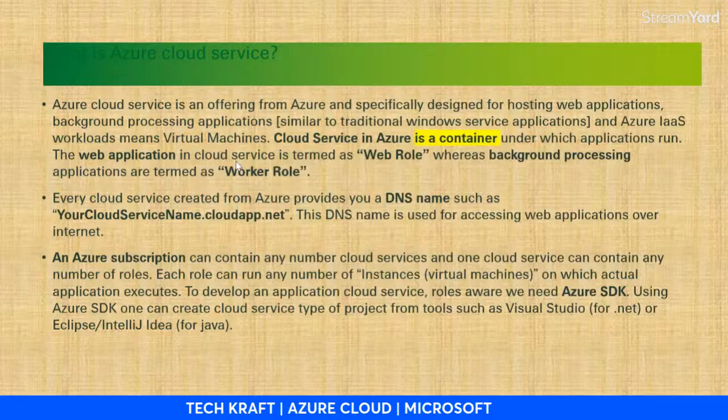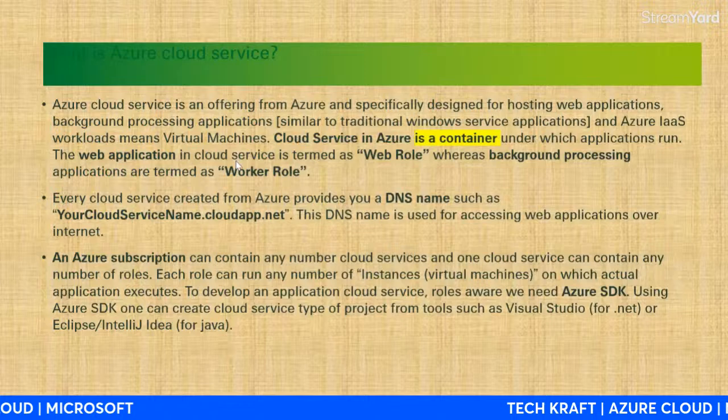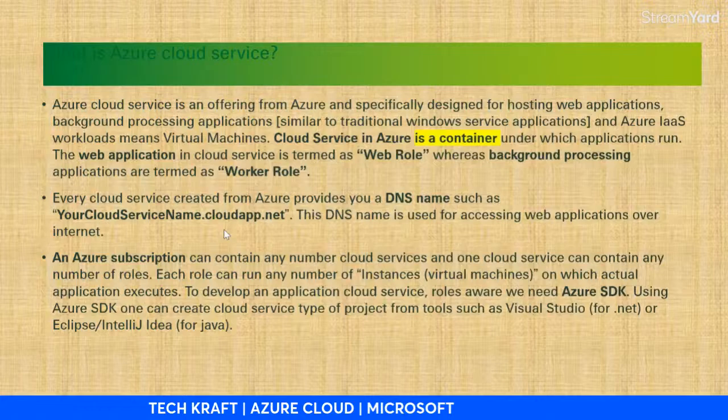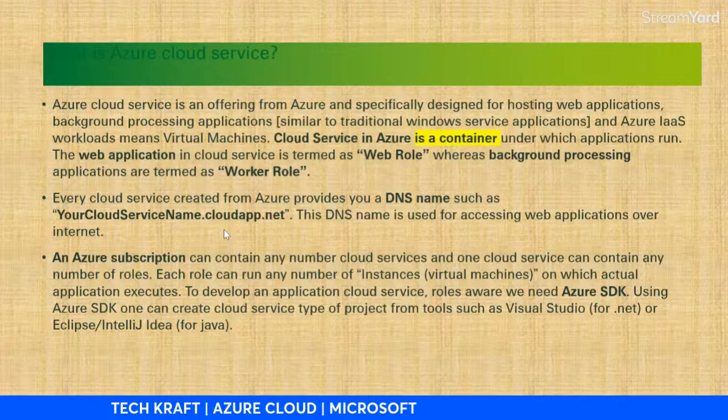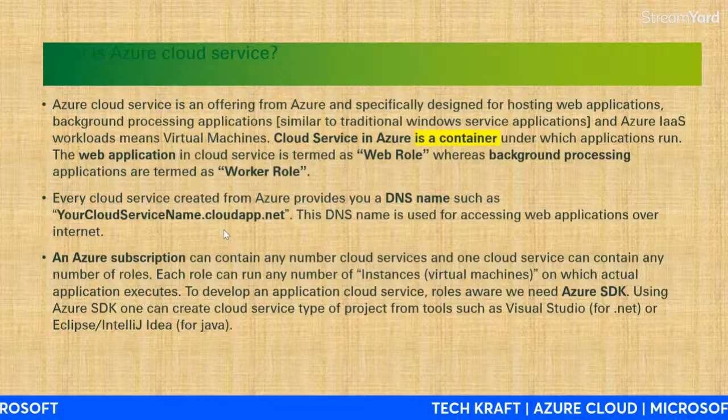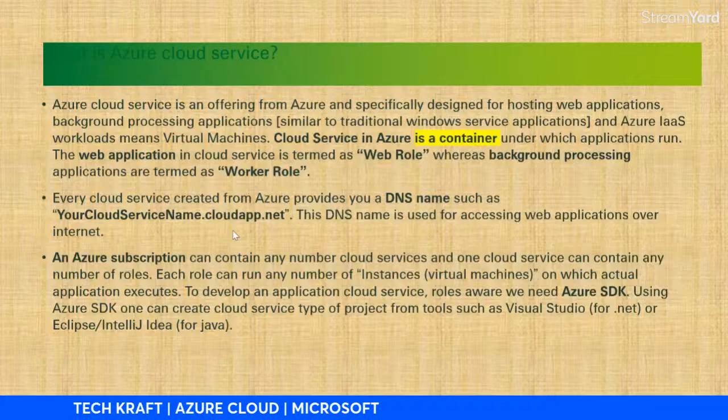Azure Cloud Services is designed for hosting web applications and background processing applications, with two roles: web role and worker role. For example, a cloud service application would be accessible via a DNS name like 'yourcloudservice.cloudapp.net' — where DNS stands for Domain Name Server.